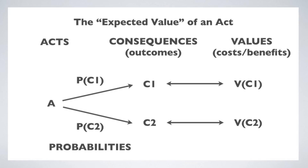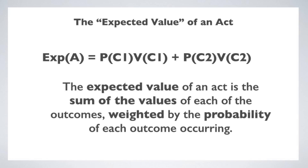The different outcomes may not be equally likely. Sometimes we know that one outcome is more likely to happen than the other, so we can ascribe a probability to each of the outcomes — the probability of C1 and the probability of C2. Now we have enough to define the expected value of the act. The expected value of an act is just the sum of the values of each of the possible outcomes, weighted by the probability of each outcome actually occurring. When money is involved, this makes it easy to work with because dollars gained and dollars lost can stand as a useful proxy for the positive and negative values associated with different outcomes.